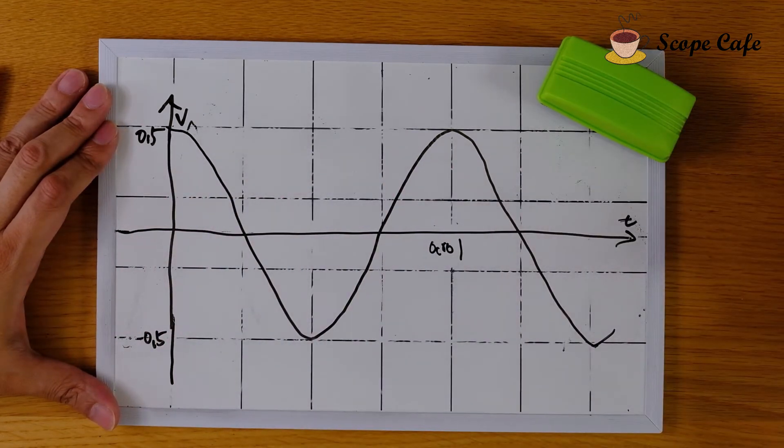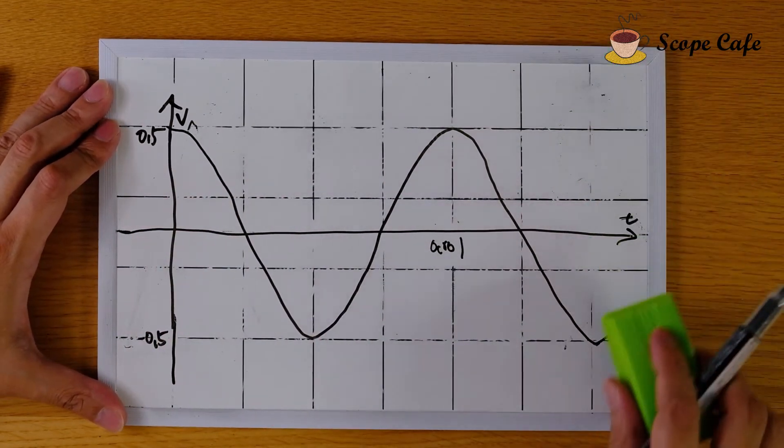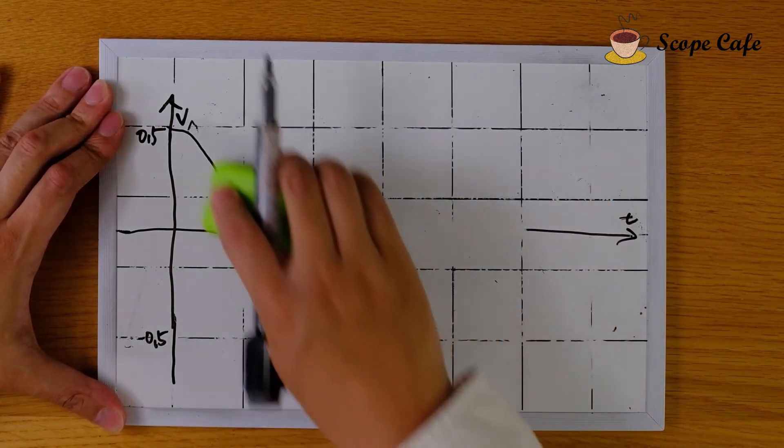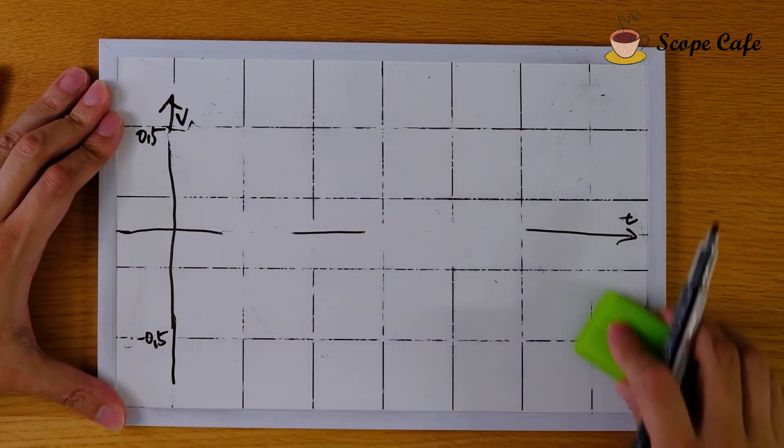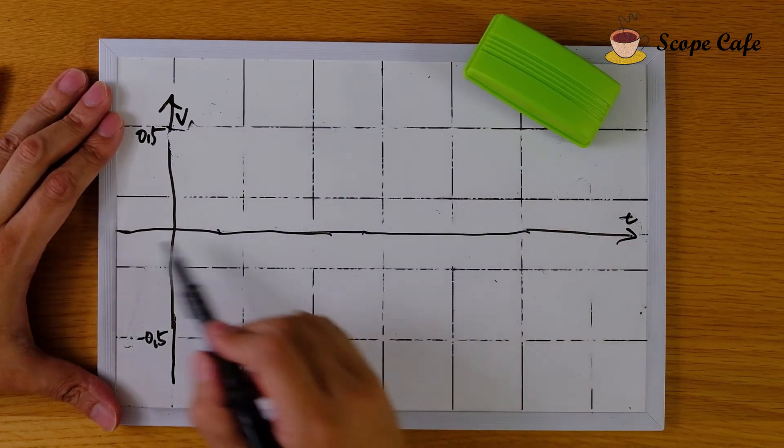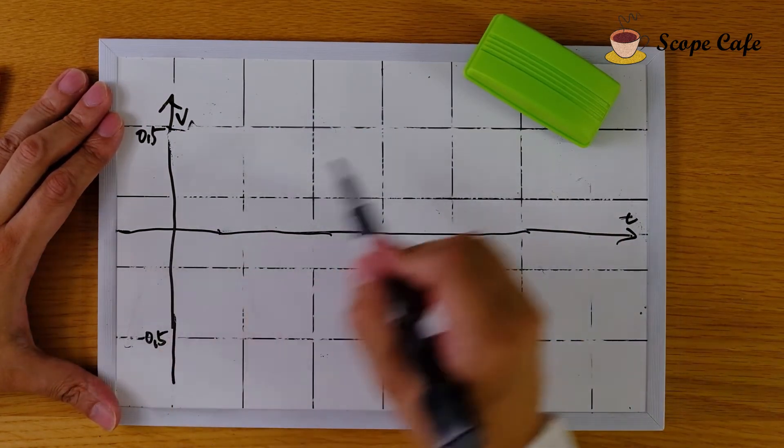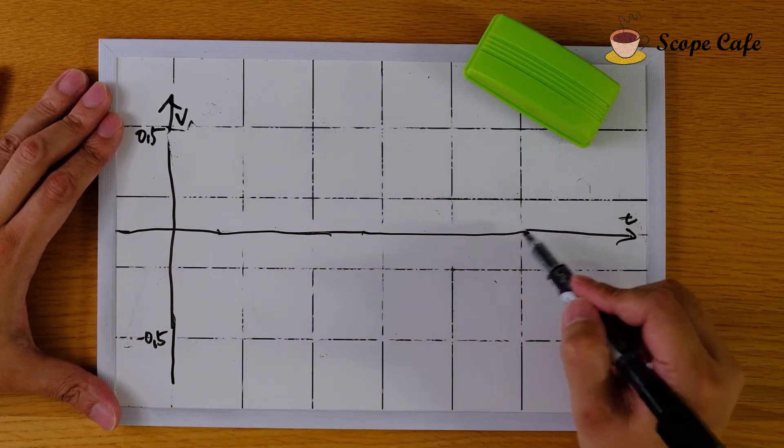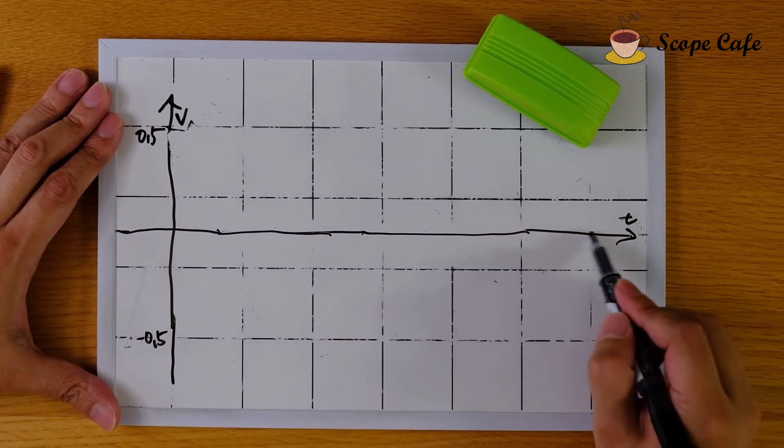So there's the answer of increasing the number of periods, and also the answer of starting at another phase,